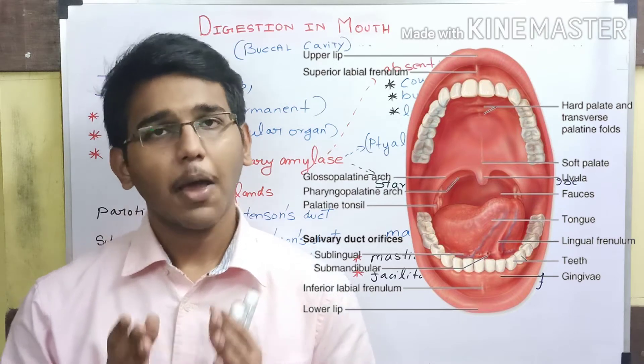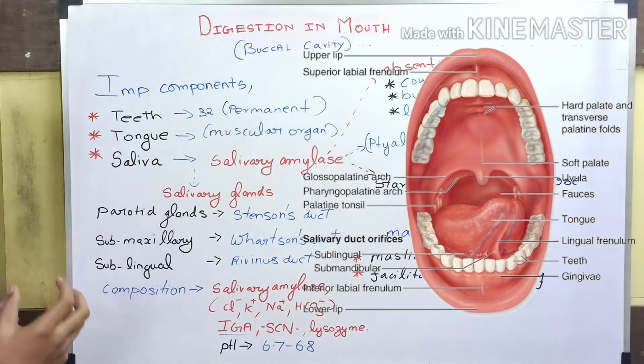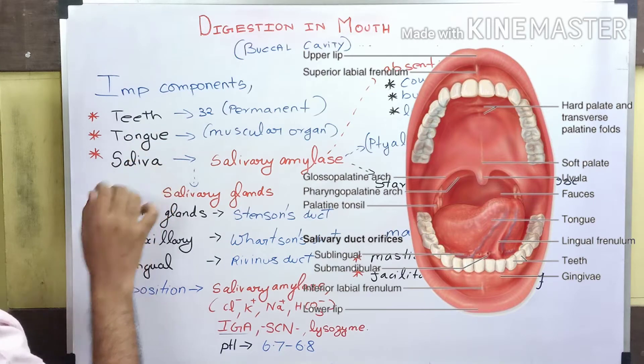Three components play an important role in digestion of food particles in the mouth: teeth, tongue, and saliva.